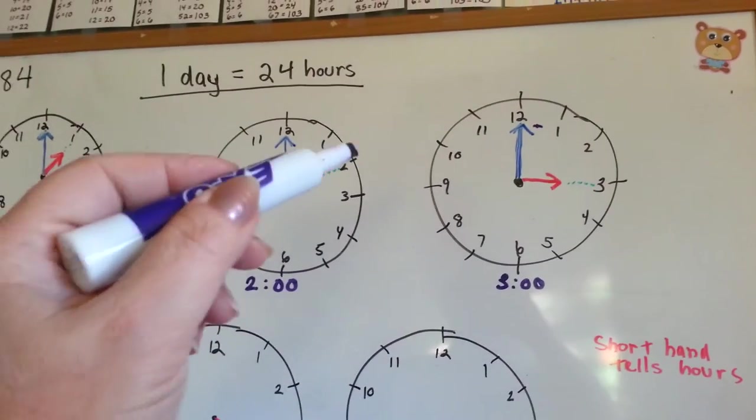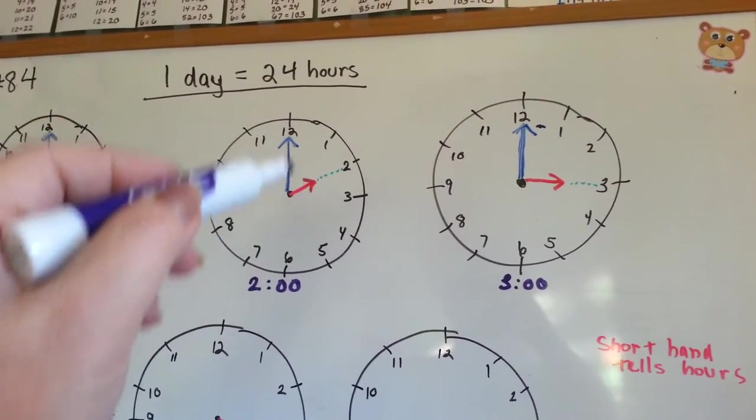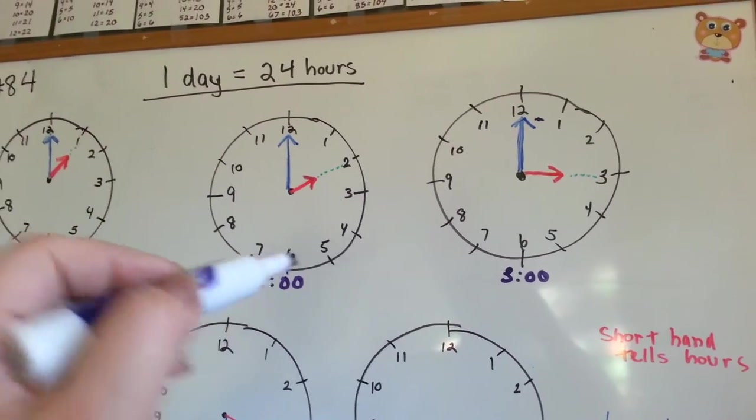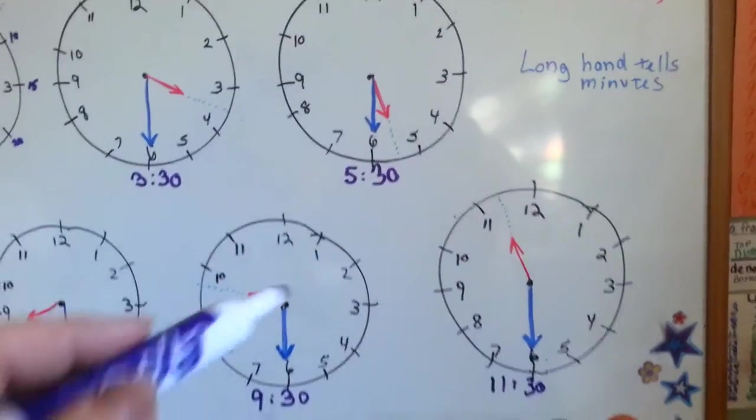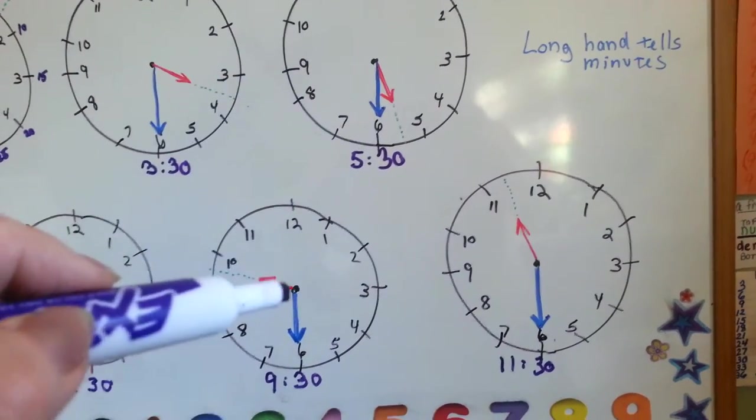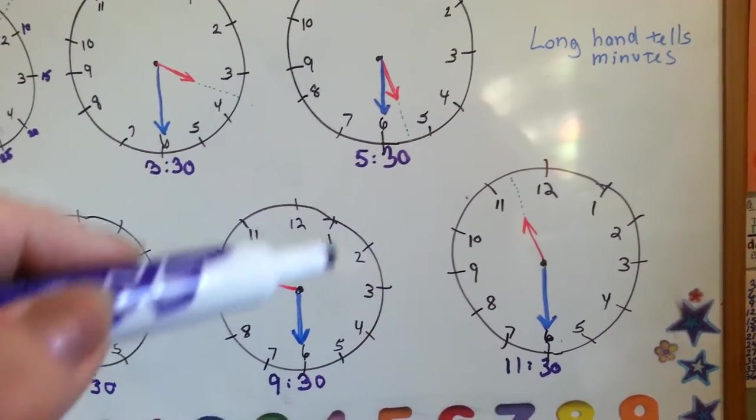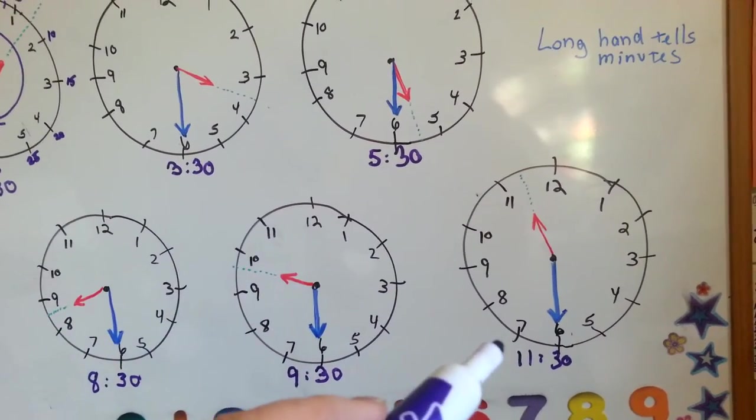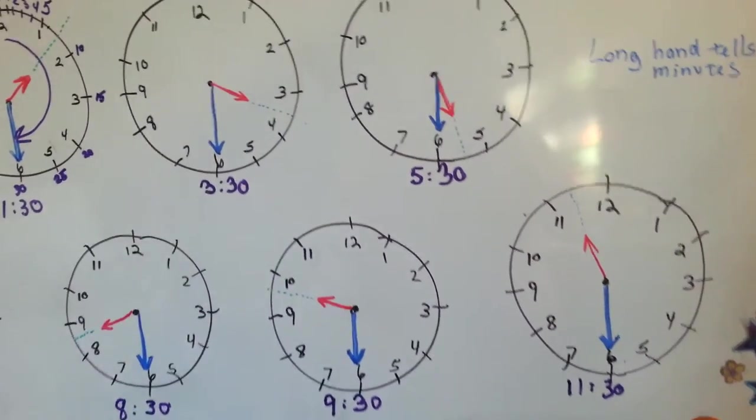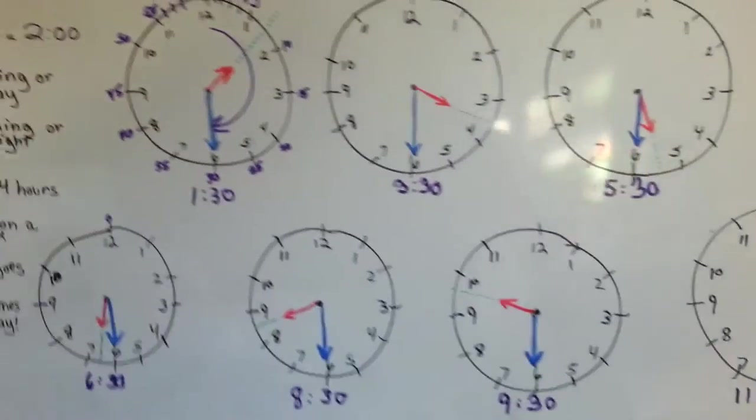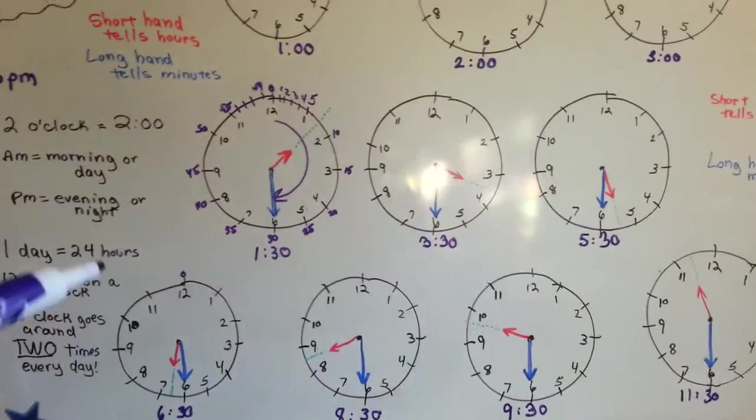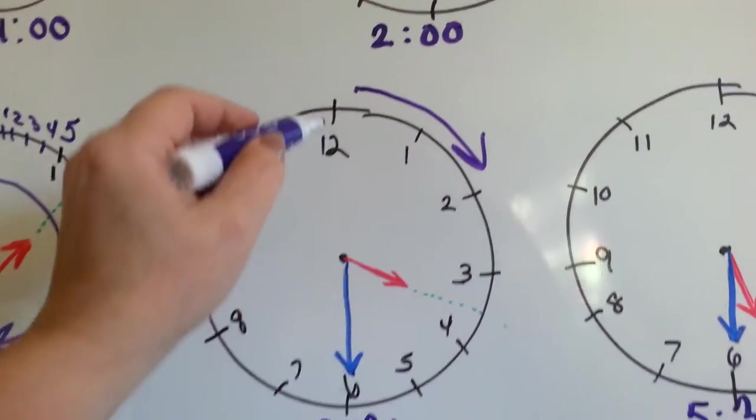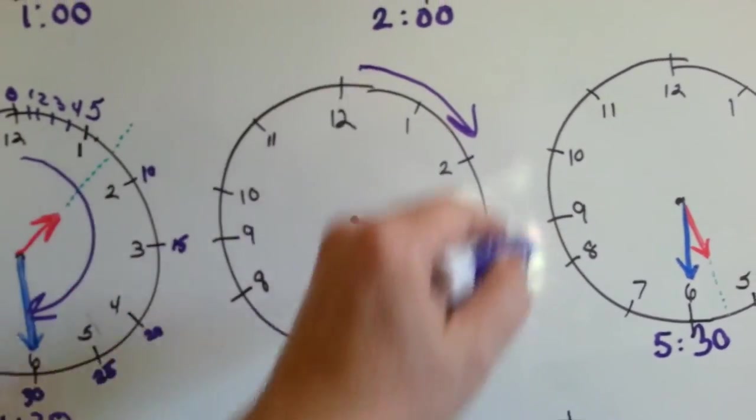Hour hand pointing on the number, minute hand straight up is o'clock. It's whatever that is pointing at, 2 o'clock, 3 o'clock. When the hour hand is in between a number, you pick the smaller number and you count by fives for the minute hand. 9:30, 11:30, 8:30. See, it's not that hard to read a clock. The clock always goes around this way. It always goes around this way.